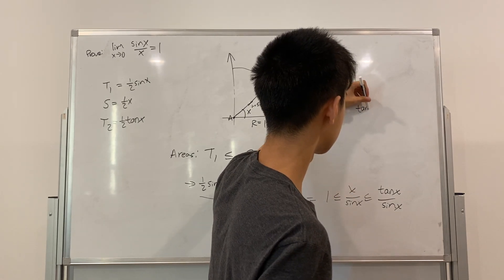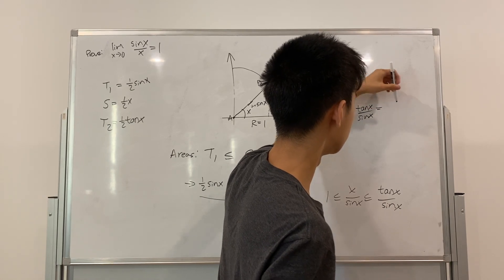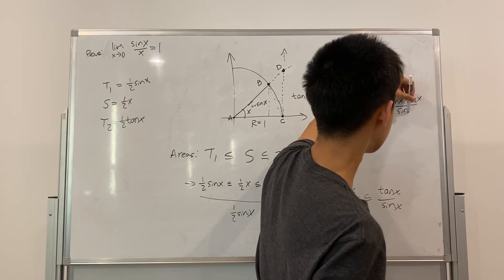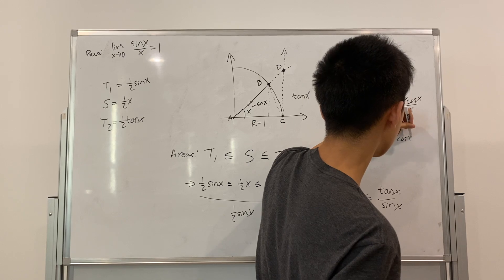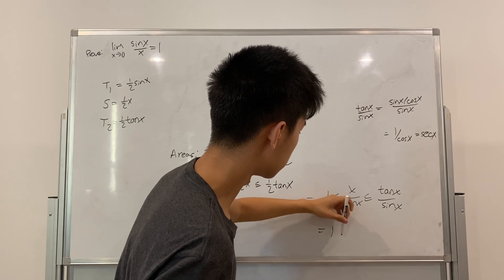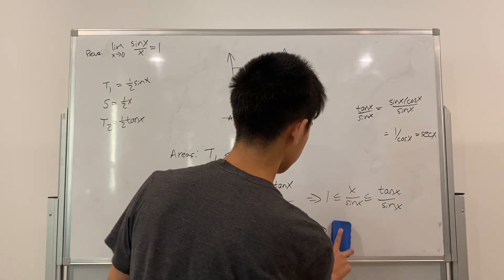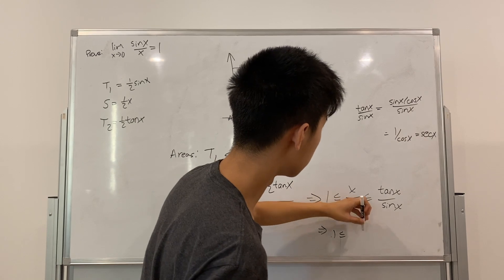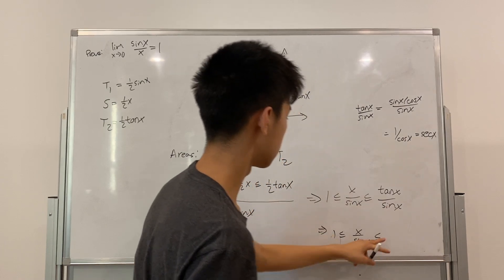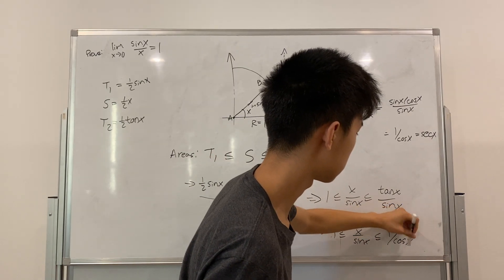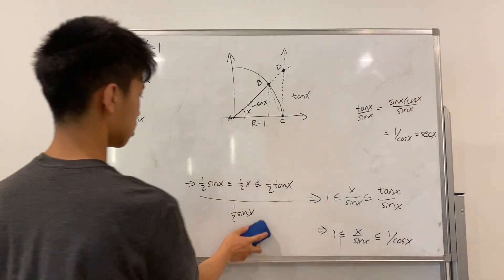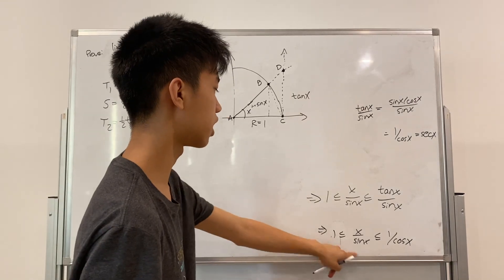Then, tangent of X, if you remember, over sine of X, that's equal to sine of X over cosine X, over sine X. So, we're just left with one over cosine X, or secant of X. So, this statement is equivalent to one is less than or equal to X over sine of X, less than one over cosine of X. So, let me just erase this now. We're here now.